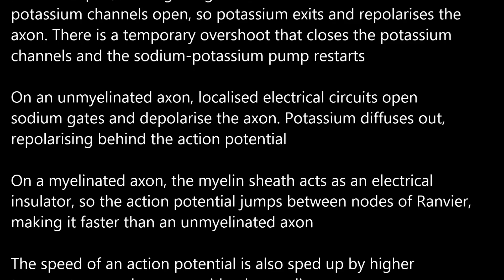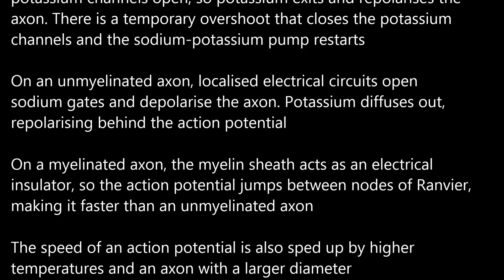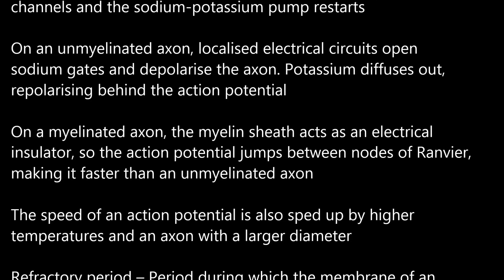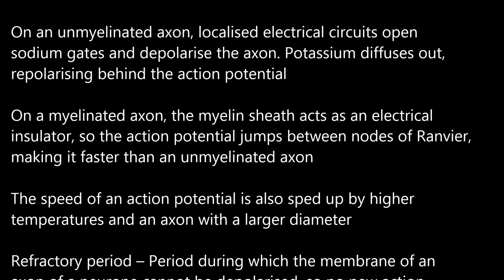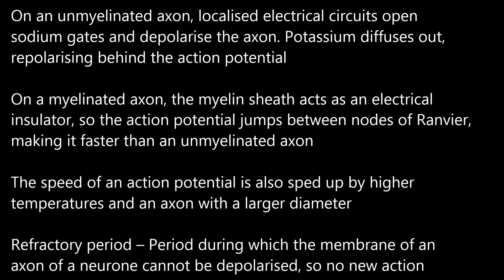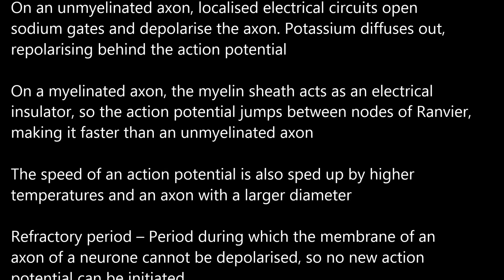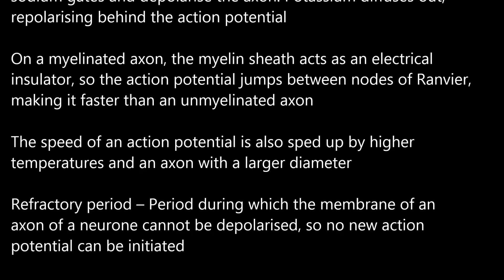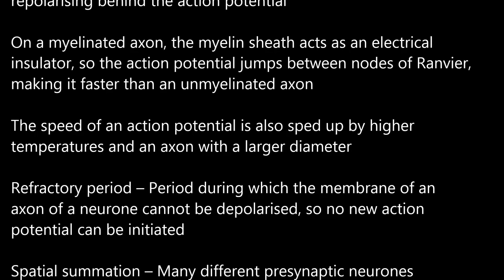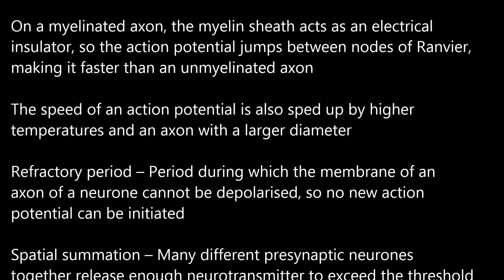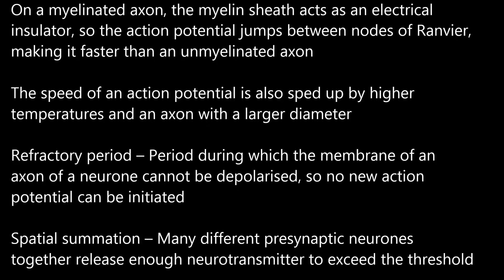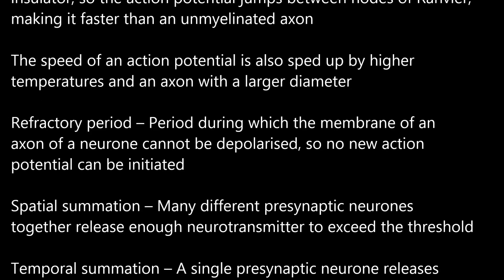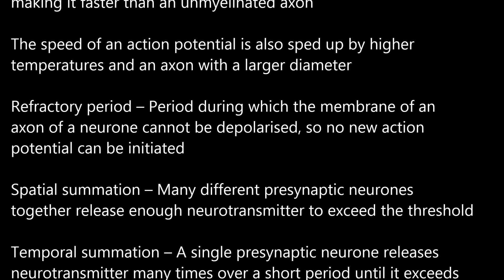On an unmyelinated axon, localised electrical circuits open sodium gates and depolarize the axon. Potassium diffuses out, repolarizing behind the action potential. On a myelinated axon, the myelin sheath acts as an electrical insulator, so the action potential jumps between nodes of Ranvier, making it faster than an unmyelinated axon. The speed of an action potential is also increased by higher temperatures and an axon with a larger diameter.